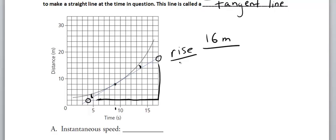And the run goes from 4 seconds to 17 seconds. So the run would be 13 seconds. You punch that into your calculator, and you should get about 1.2 meters per second.